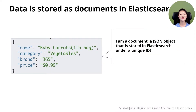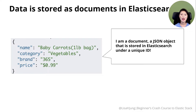Data is stored in Elasticsearch as documents. A document is a JSON object that contains whatever data you want to store. So let's say we're running an online grocery shop app and we're helping our customers search for grocery items online. A document for one grocery item would look like this: in a JSON object, it contains a list of fields or key-value pairs — for example, the name of the product, the category it belongs in, its brand, and its price.